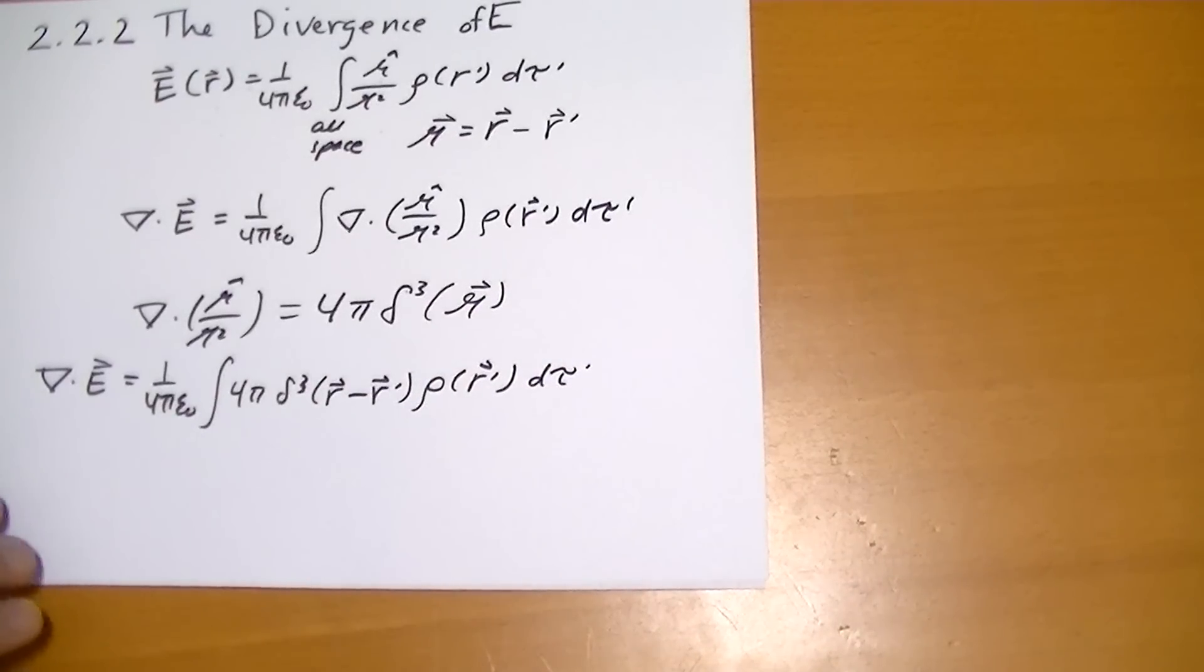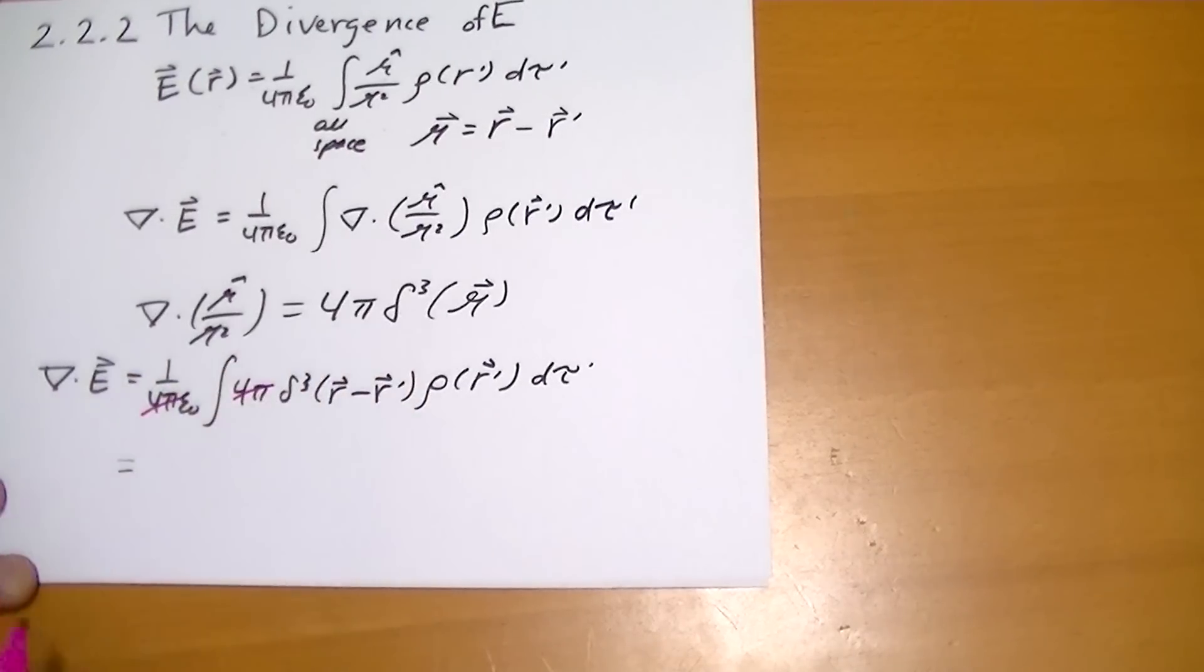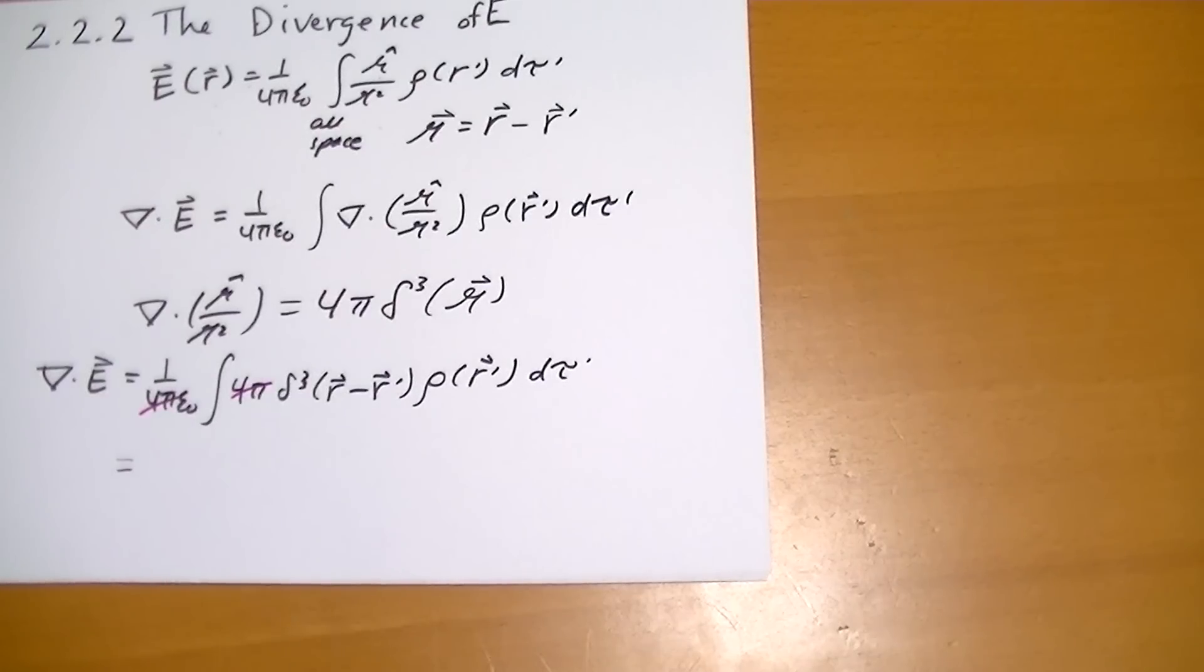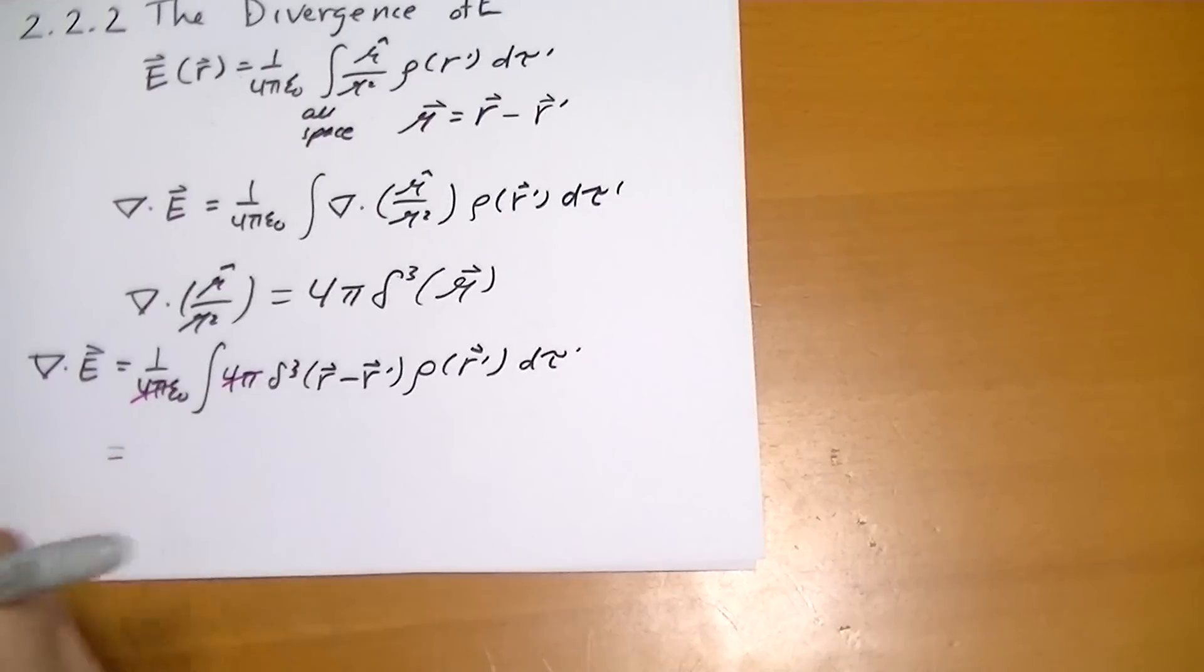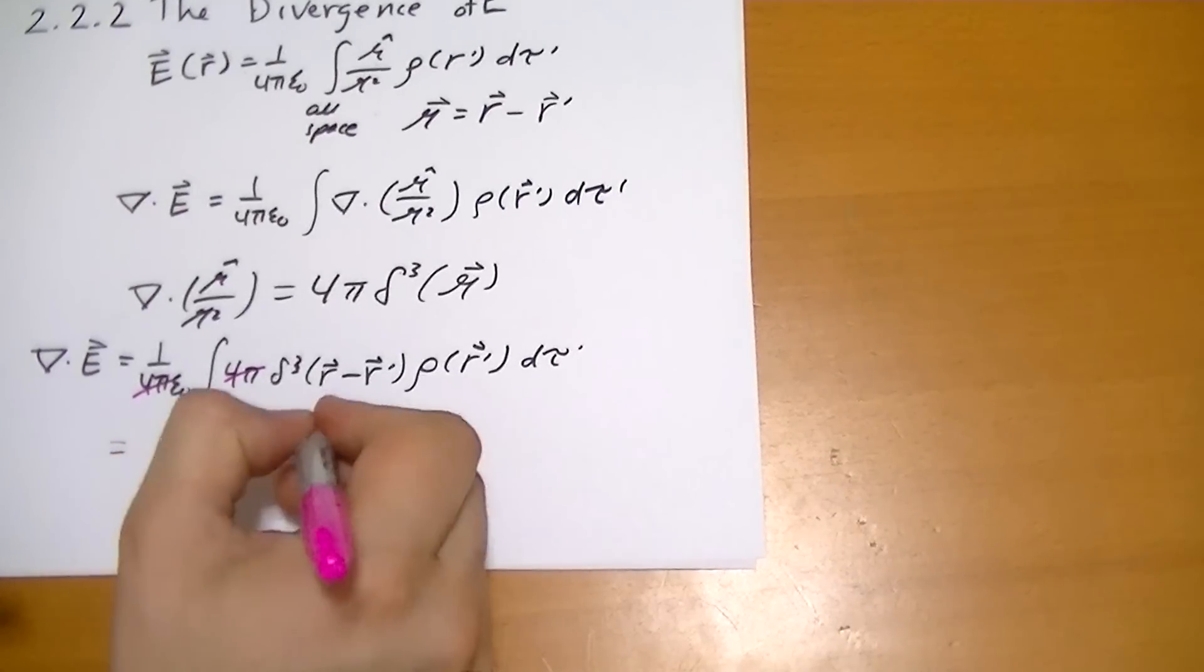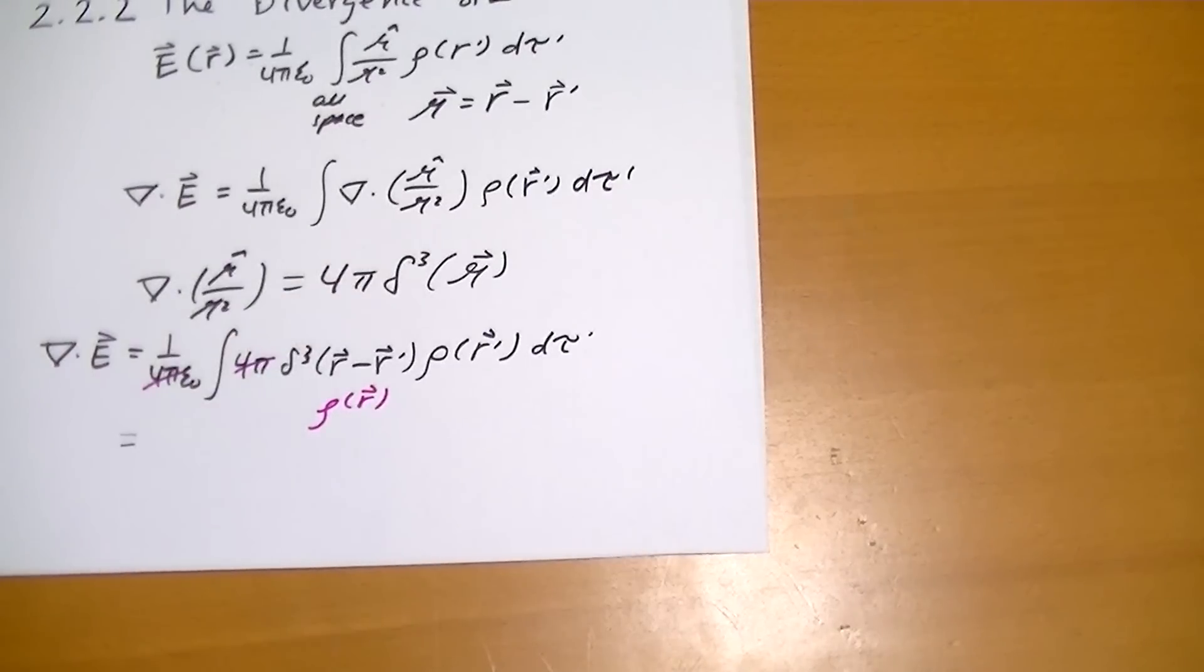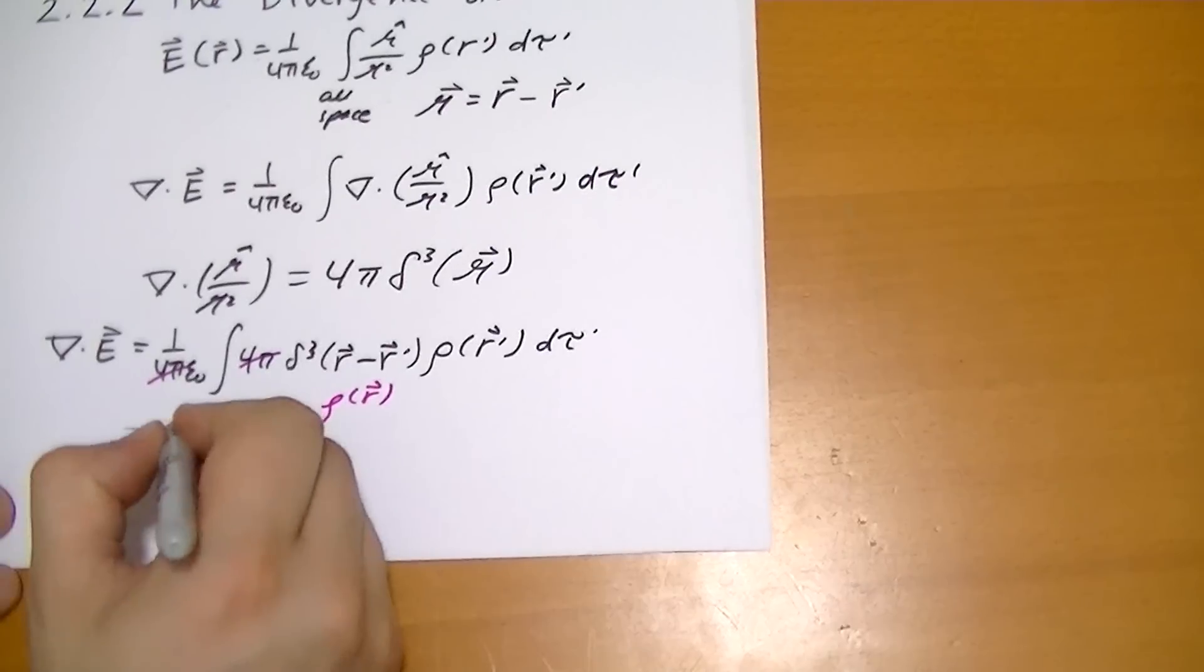So going over all space, the answer has to be these 4 pi's. Let me just cross off what cancels out. These 4 pi's cancel out. This integral is going to pull out the value of rho at r. So we get that all this is basically rho of r. That's the way the Dirac-delta function rolls. And so we end up with the rather simple function.